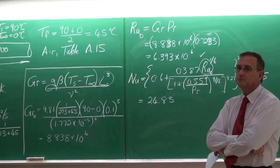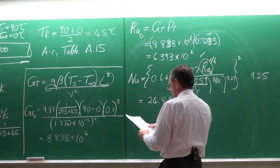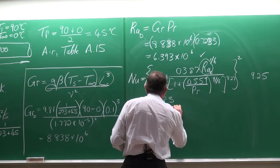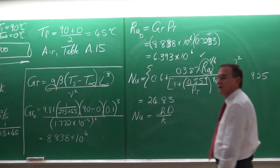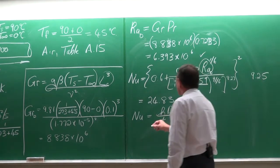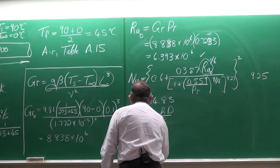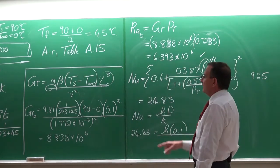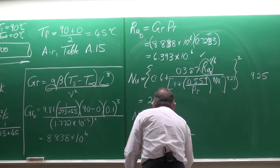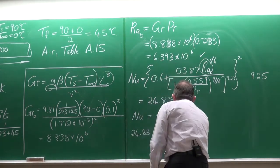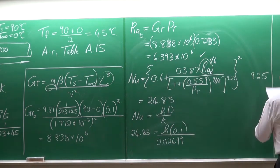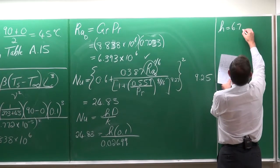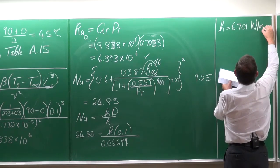If we've got the Nusselt number, it's easy to get the heat transfer coefficient. The Nusselt number equals h × D / k, so 24.83 = h × 0.1 / 0.02699. From this, we can solve the heat transfer coefficient as h = 6.701 W/m²·°C.